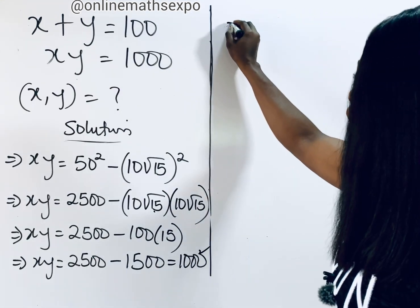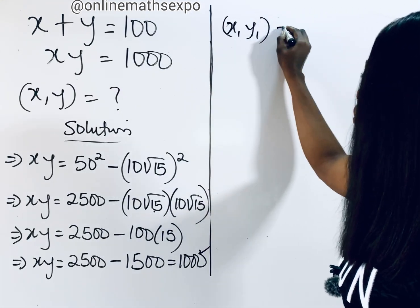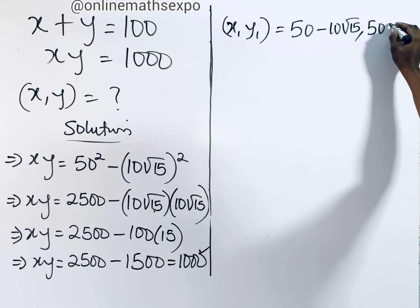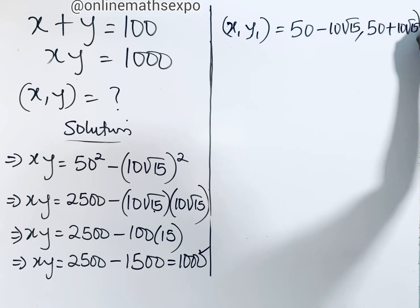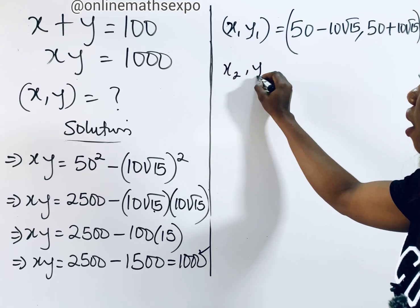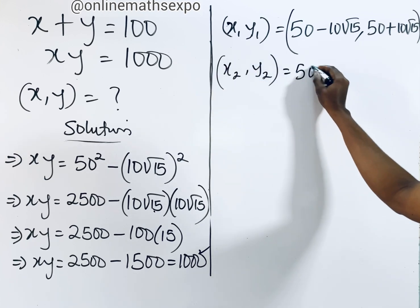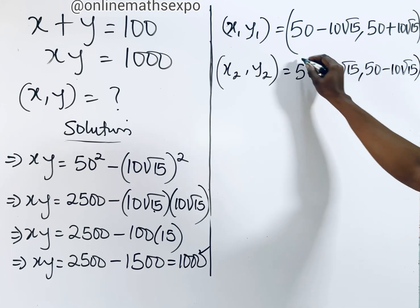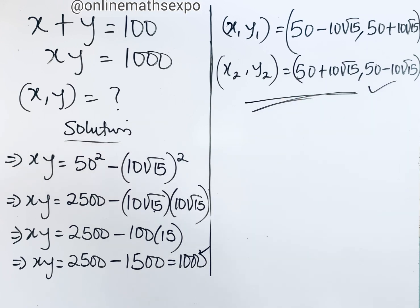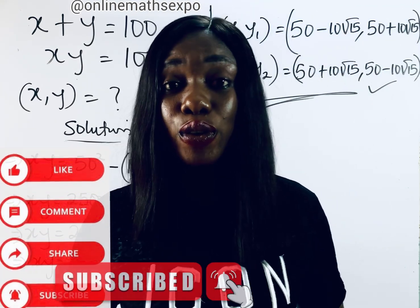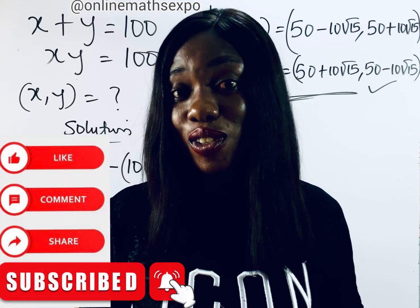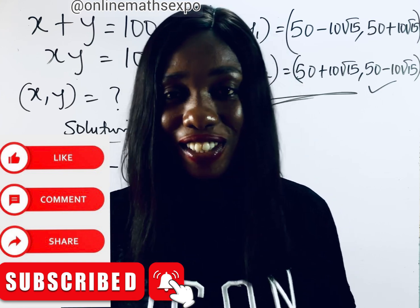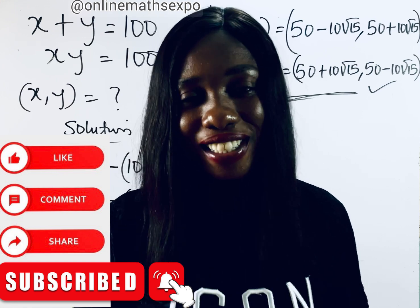In conclusion, the values of x and y are: first set — x equals 50 minus 10 root 15 and y equals 50 plus 10 root 15; second set — x equals 50 plus 10 root 15 and y equals 50 minus 10 root 15. I hope this really helps you. Don't forget to like this video, share it so others can learn, and tell us how you feel in the comments. Click the notification button for updates — see you in the next class!